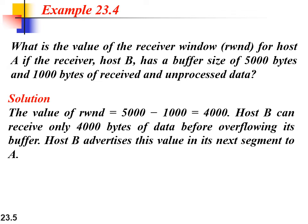For example, if the receiver has a buffer size of 5000 bytes but has 1000 bytes of received and unprocessed data, it cannot advertise 5000 bytes. It can only advertise the remaining capacity, which is 5000 minus 1000 equals 4000 bytes. So the receiver advertises its window size as 4000 bytes and the sender considers the receiver window as 4000 bytes.